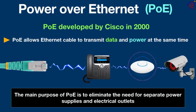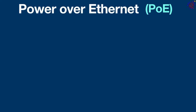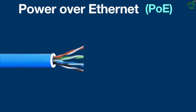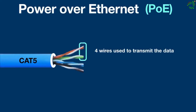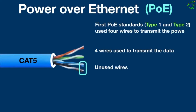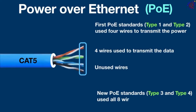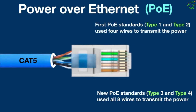The way Power over Ethernet works is simple. An ethernet cable has four twisted pairs of copper wires inside, for a total of eight wires. In CAT5 and older versions of ethernet cable, four wires were used to transmit data but the remaining four wires were not used. The first PoE standards initially took advantage of those four unused wires to transmit power, while newer PoE standards use all eight wires to transmit power.